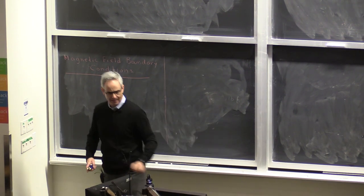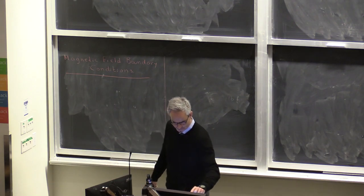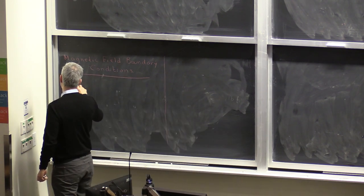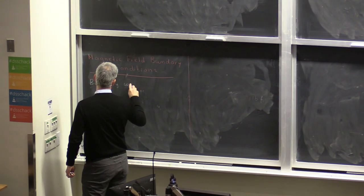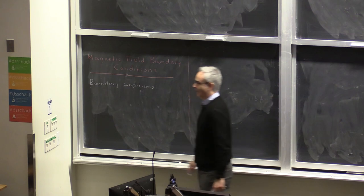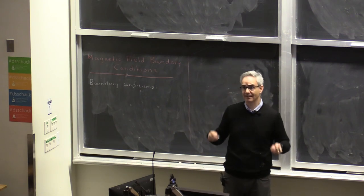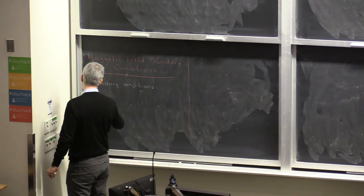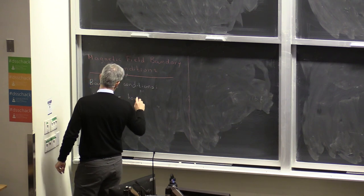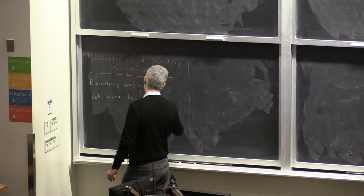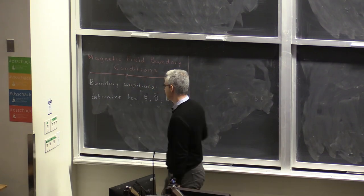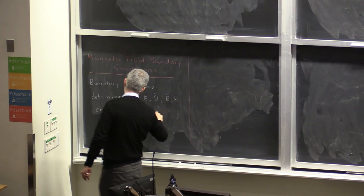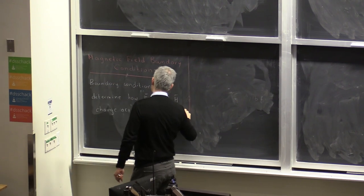Boundary conditions, both for the electric and the magnetic field, determine how the electric and magnetic field changes across the interface between two media. So boundary conditions determine how electric field, electric flux density, magnetic flux density, and magnetic field intensity change across the interface between two media.